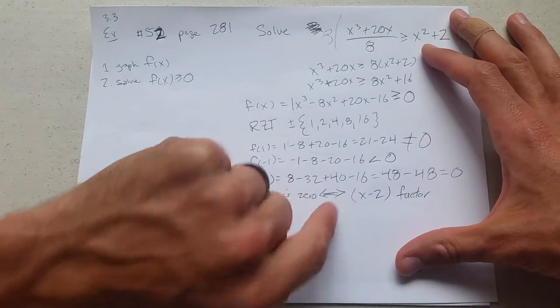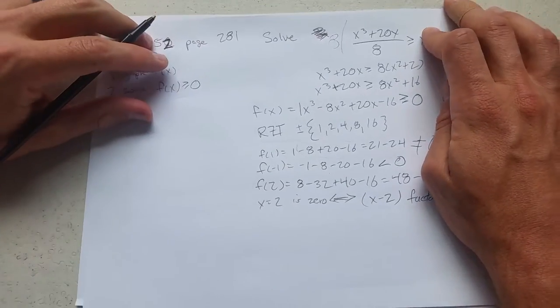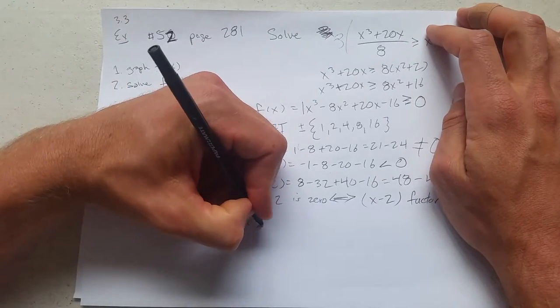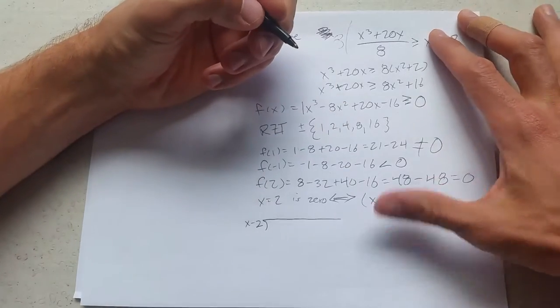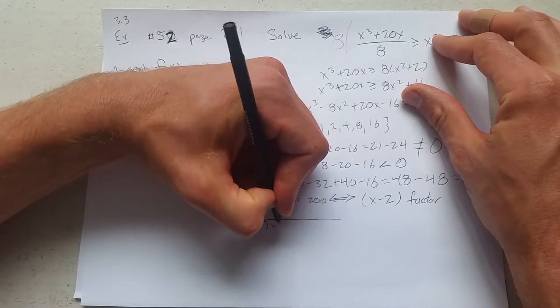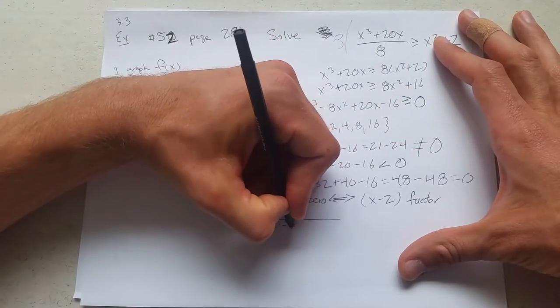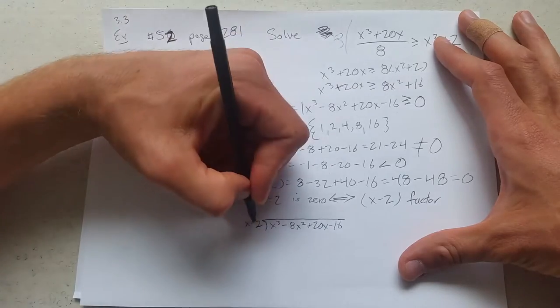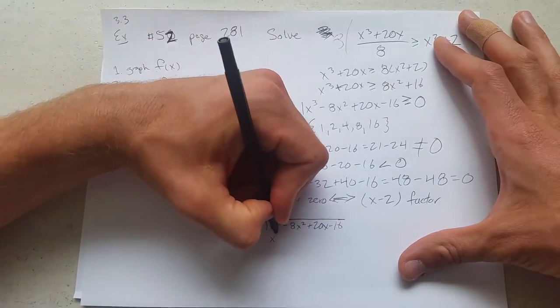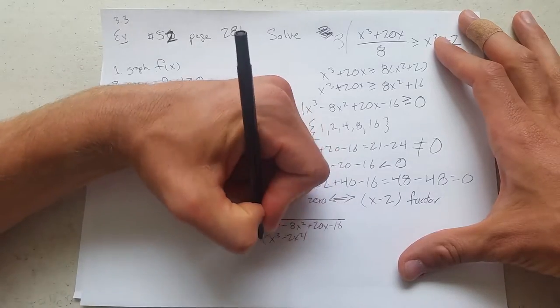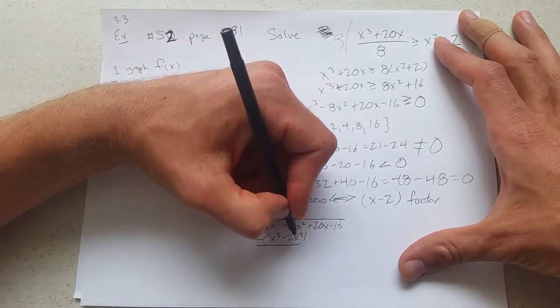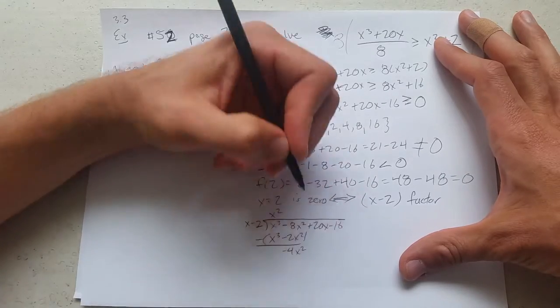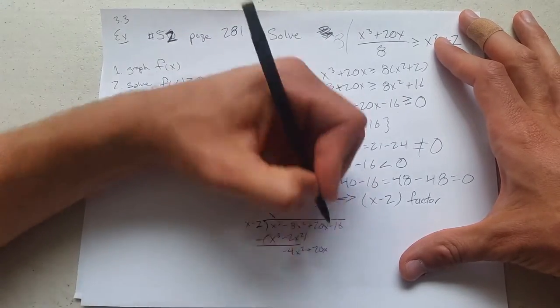What we're going to do now is divide f of x by this factor. Make sure you write down the original f of x. x cubed. I have all my terms, so I don't need to worry about any missing terms. Now, we do this division. We need x squared. x cubed minus 2x squared. Subtract. x cubed minus x cubed 0. Minus 8x plus 4x squared is minus 4x squared plus 20x.